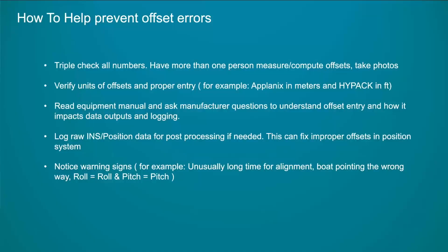How do you avoid it? Triple-check your numbers. A great way is to have two people measure the offsets independently — one person measures, comes up with their values, does not tell the second person, and then that person measures. Use a total station instead of a tape measure. One problem a lot of people have is they assume a boat is square. I was setting up a boat in the Philippines, did a whole level loop around the boat, still couldn't get things to line up. The boat builder came up, started laughing, and said, 'Oh, you assumed the roof was welded on straight.' It wasn't. Don't make assumptions.